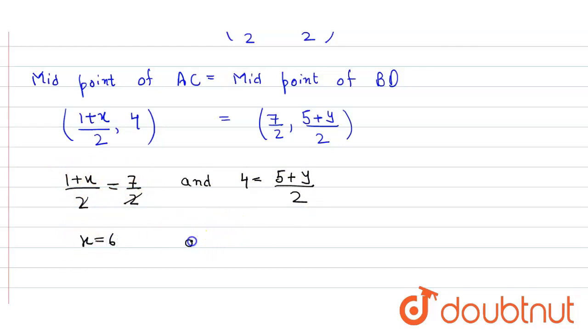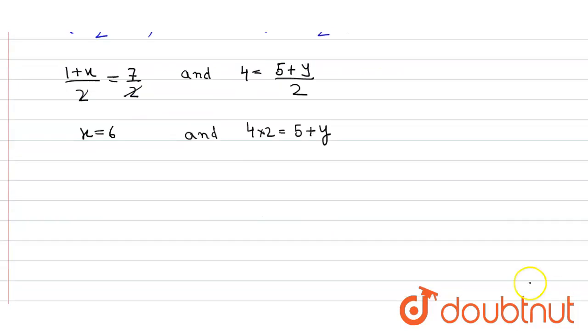And for y, 4 times 2 equals 5 plus y. So y equals 8 minus 5 equals 3. So the x value is 6 and y is 3, and that's our answer.